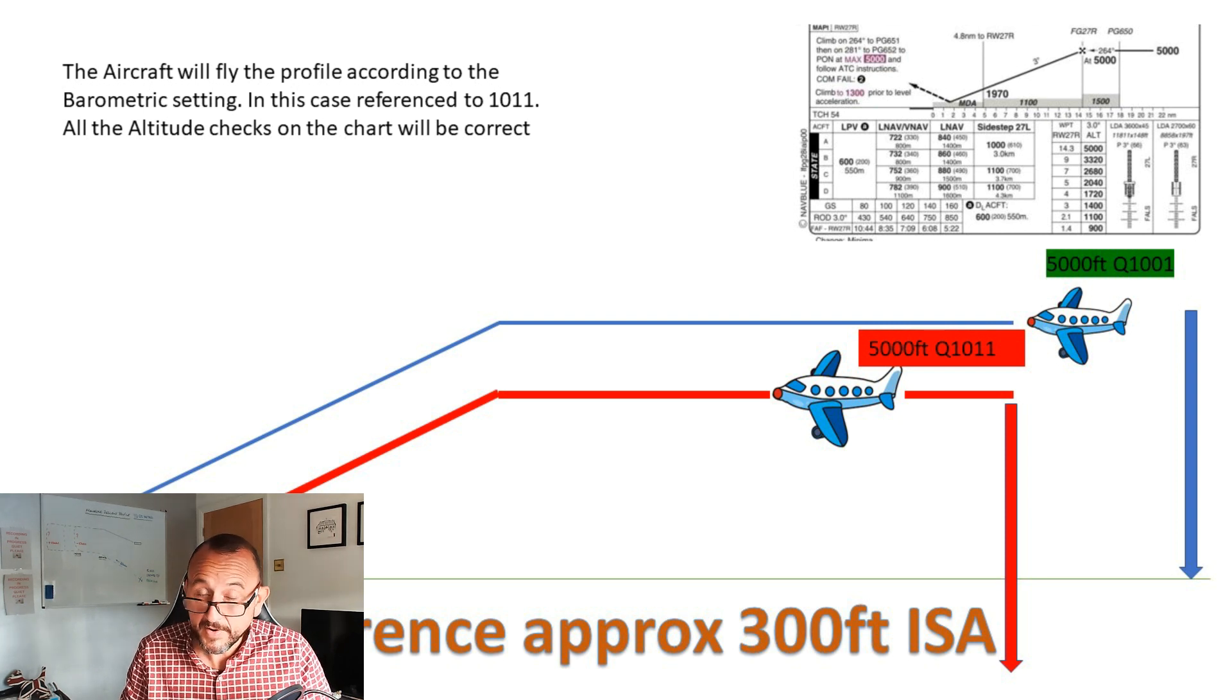The airplane just thinks that it's flying at 5,000 feet based on the baro that is set on the FCU. The crew would have set this when they were cleared to an altitude. The aircraft then flies a platform altitude at 5,000 feet based on that baro and then commences its descent at the Foxtrot Gulf 27 right.